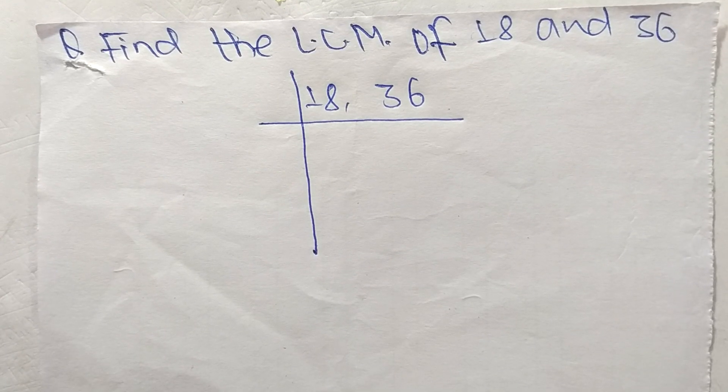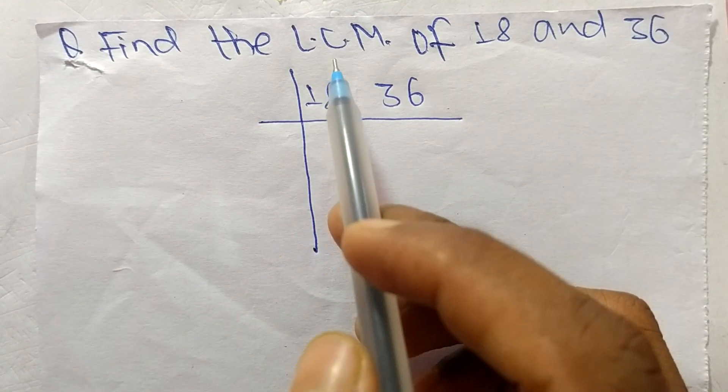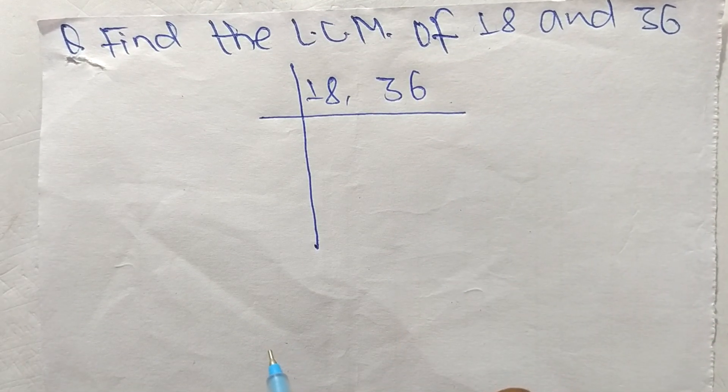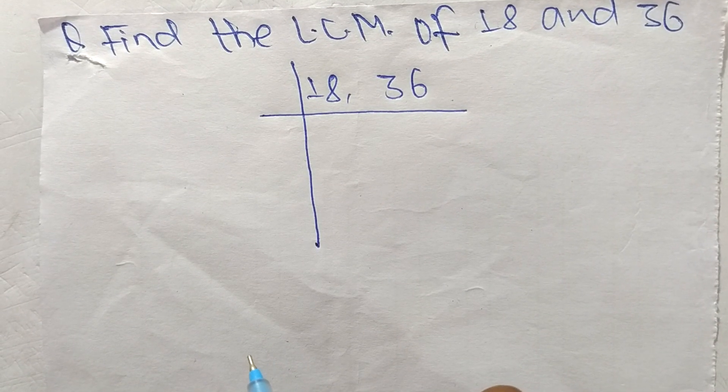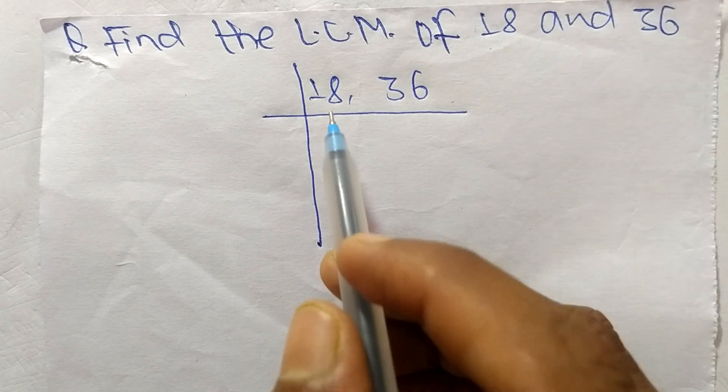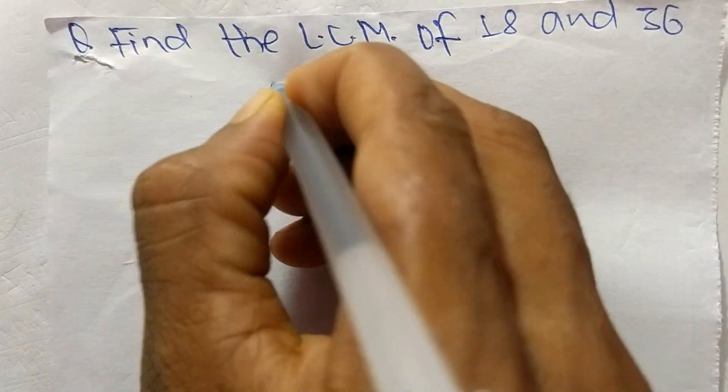Today in this video we shall learn to find the LCM of 18 and 36. First, we have to choose the lowest number that can exactly divide 18 and 36.